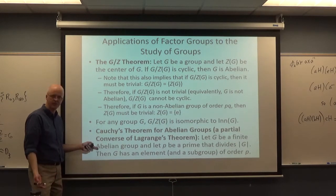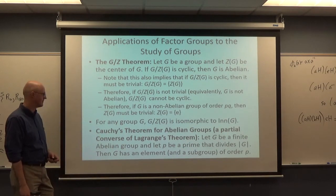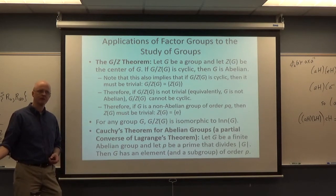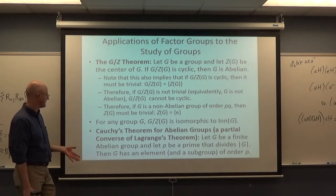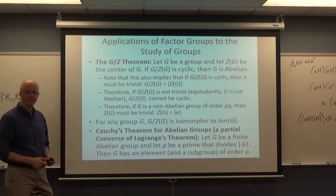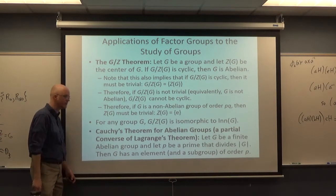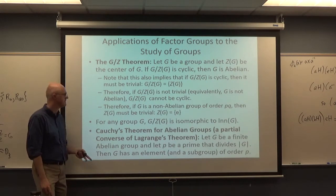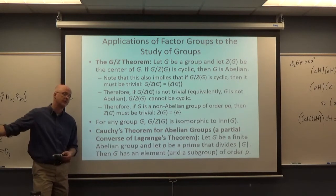G is assumed to be a finite abelian group — with the first Sylow theorem, G is not assumed to be abelian. P is a prime that divides the order of G. In the first Sylow theorem we assume P^k divides the order of G. Cauchy's theorem for abelian groups says G has an element of order P and therefore also a subgroup of order P, whereas the first Sylow theorem gives a subgroup of order P^k. So that first Sylow theorem is more general.